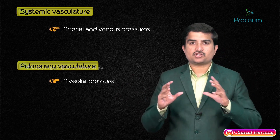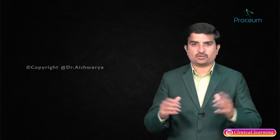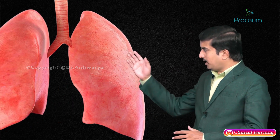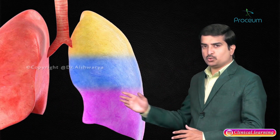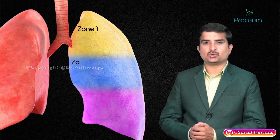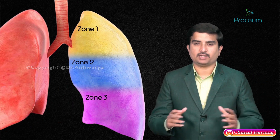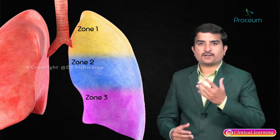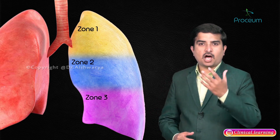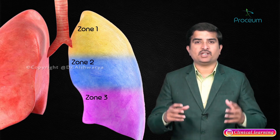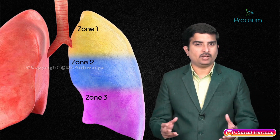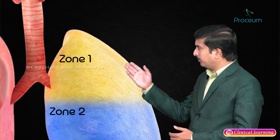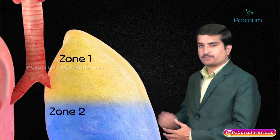Taking this statement into consideration, the lung is divided into three zones — zone 1, zone 2, and zone 3 — which shows the differences in how blood flow is distributed in the upright lung. Let us talk about the zone 1 blood flow first.